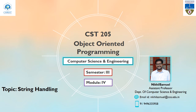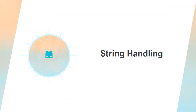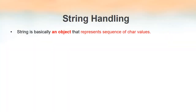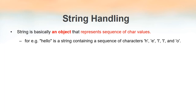Welcome to the video series on object-oriented programming. In this lecture, we will be discussing string handling. Strings in Java are basically objects that represent a sequence of character values. For example, the word 'hello' can be represented as a sequence of characters H, E, L, L, and O. That is why a string is called a sequence of character values.